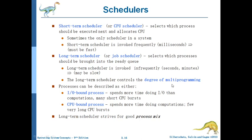The long-term scheduler controls the degree of multiprogramming. Degree of multiprogramming refers to how many jobs are getting executed per unit of time in the system. If you want more jobs executed per unit of time, more jobs are selected by the long-term scheduler. If technical issues arise, you can reduce the degree of multiprogramming - fewer jobs are selected from the hard disk and given to the CPU.